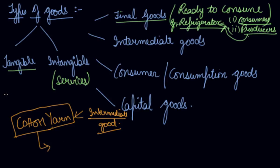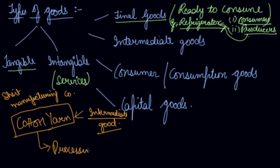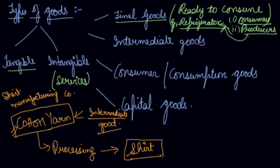Say you are a shirt manufacturing company. You are purchasing cotton yarn, and you will do some processing on it — that is your production activity. Then you will get a shirt out of it. So the cotton yarn is your intermediate good, and the shirt which is ready to sell in the market is your final good.